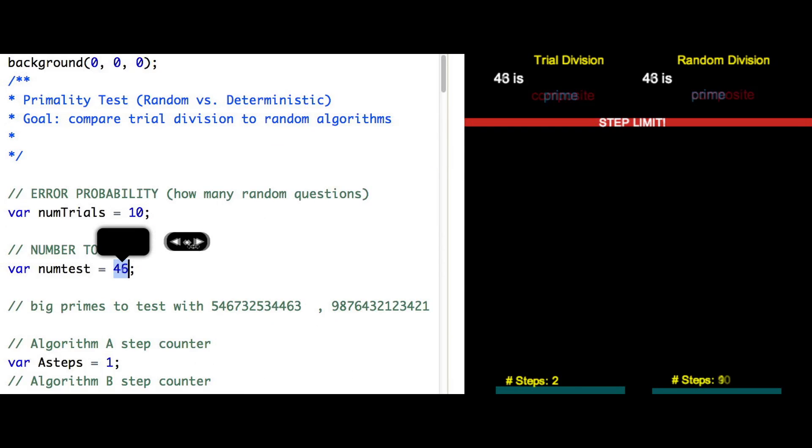To begin, notice the variable number of trials. This is the number of random guesses. We'll start at something small such as three. Notice even with small input, if the input is prime, the random division algorithm will always output prime. But when the input is composite, we see the random division can make mistakes and identify incorrectly as prime.